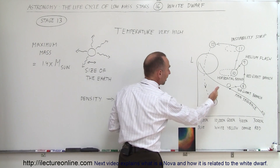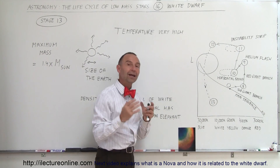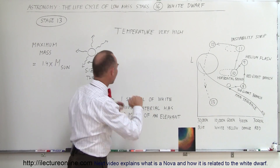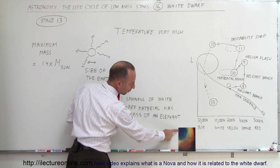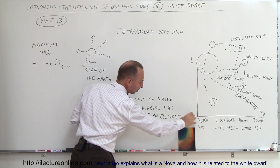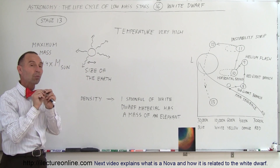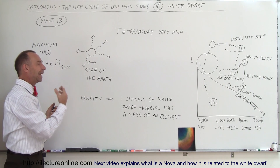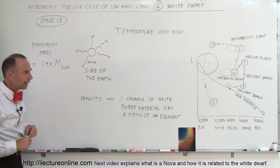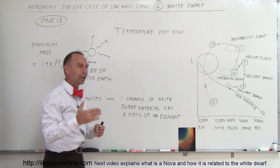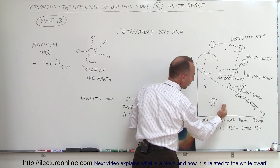Where do white dwarfs appear in the HR diagram? Down here, because they're not very luminous. They're very hot, but they're not very luminous because they're so small — the surface area of these white dwarfs is so tiny. You can see a white dwarf remnant with the outer layers, the planetary nebula, slowly fading away in the Ring Nebula. These are very small objects, very hot on the surface, but not very luminous — that's why they appear so low on the HR diagram. Over time, as they cool down and give off less and less energy, they will slowly move to the right on the HR diagram.